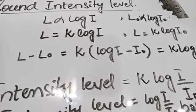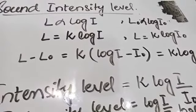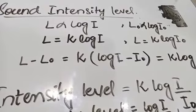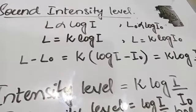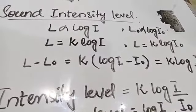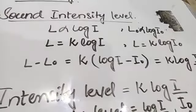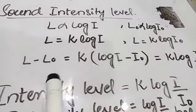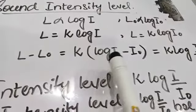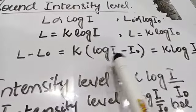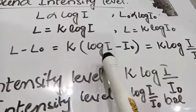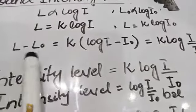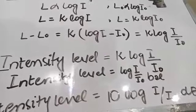Let L₀ be the loudness of the faintest audible sound, I₀ the intensity of the faintest audible sound, L the loudness of an unknown sound, and I the intensity of the unknown sound. Taking their difference: L minus L₀ equals K log I minus K log I₀. By the laws of logarithm this becomes K log (I over I₀). This difference is known as the intensity level, equal to K log (I / I₀).